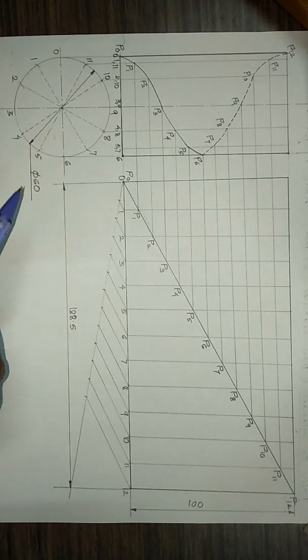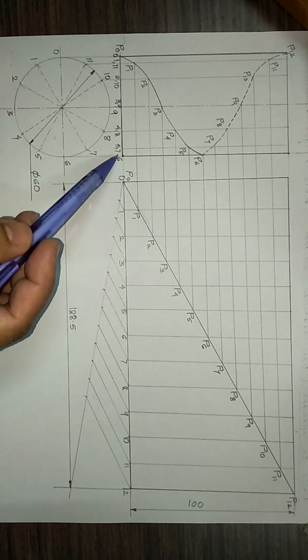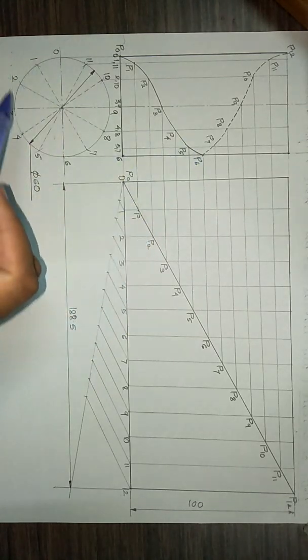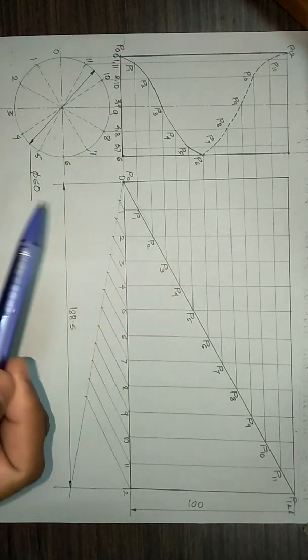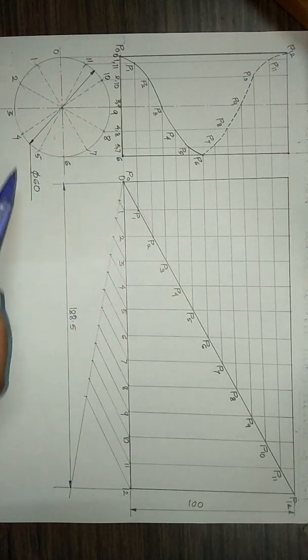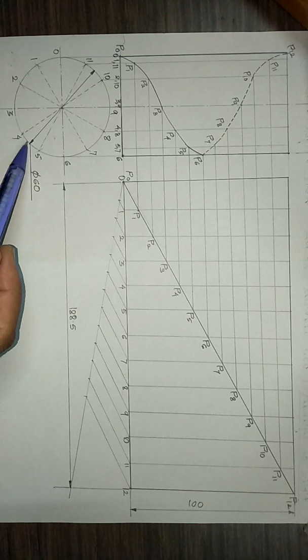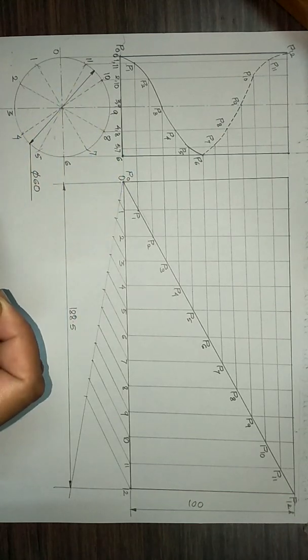Now we will see a few points on how to draw the helix on a cylinder. To start with, we have drawn the top view and the front view of the cylinder.